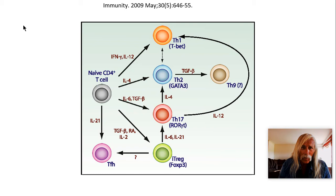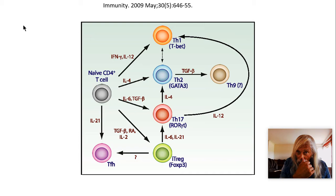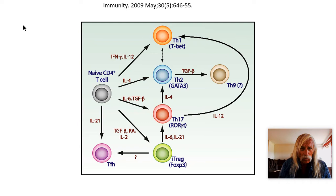ROR-gamma-T is a retinoic acid orphan receptor system; it uses retinoic acid as a ligand to turn on Th17 gene transcription. If you expose a naive CD4 cell to TGF-beta, retinoic acid, and interleukin-2, you can get an inducible T-regulatory cell, which uses FOXP3 as its main transcription factor. T-reg suppresses the other effector cells — Th1, Th2, Th17. However, T-reg can be converted to a Th17 cell, and a Th17 cell can be converted to Th1.